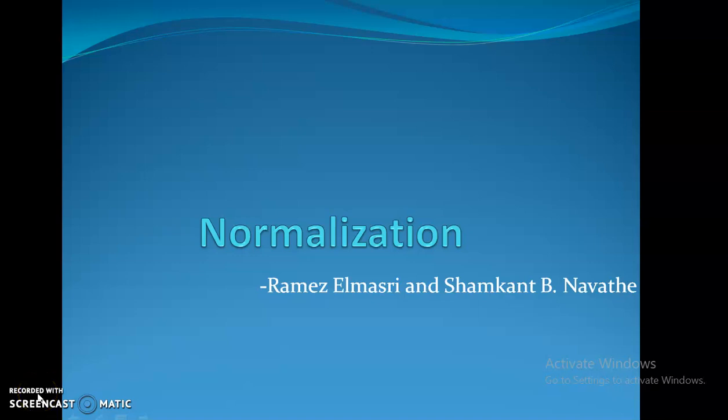Hi students, next we will see the third normal form. Hope you all understand 1NF and 2NF. So 1NF says that only atomic values are satisfied — no composite attributes, no multi-valued attributes, no nested relations. 2NF says that it should satisfy full functional dependency on the primary key. So these are the two statements we have already studied.